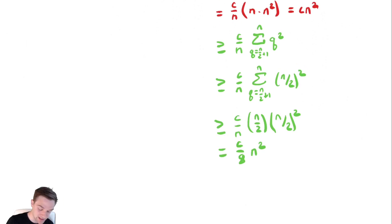So it was bounded above by cn squared and bounded below by c over 8n squared. So the expected run time, ET of n, must be theta of n squared.